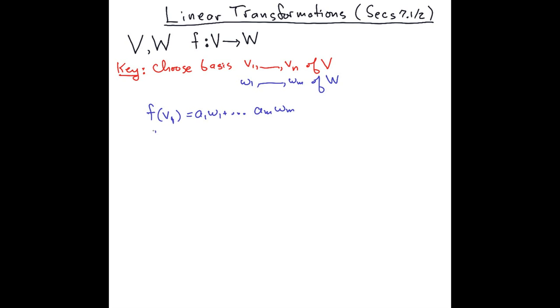And f(v_2) is some b_1·w_1 plus and so on. And so just put these numbers here, the a's and the b's and so on, into a matrix. That's going to give you the matrix of the linear transformation.